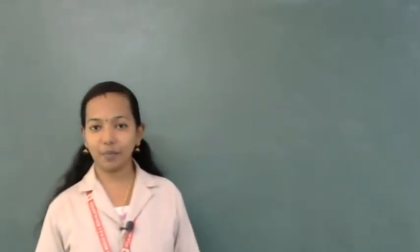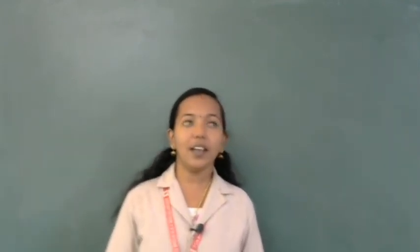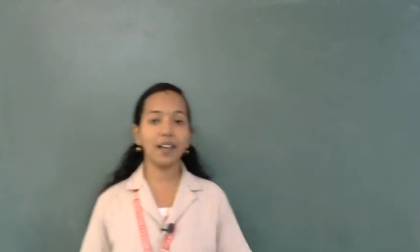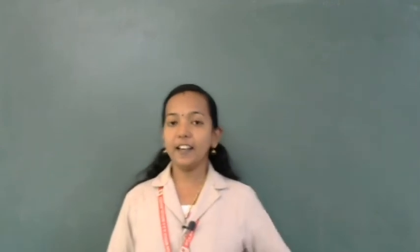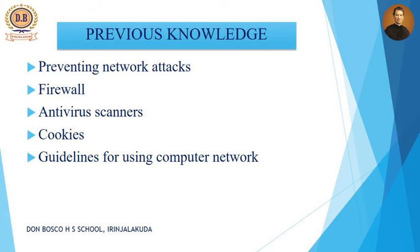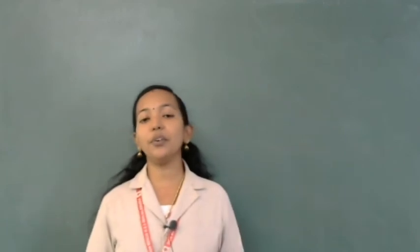Welcome to plus one computer class. We are discussing our last chapter, internet and mobile computing. The internet section is over — we covered services, threats, and protection methods including firewall, cookies, antivirus scanners, and general guidelines for internet access. In this video we are going to discuss mobile computing.